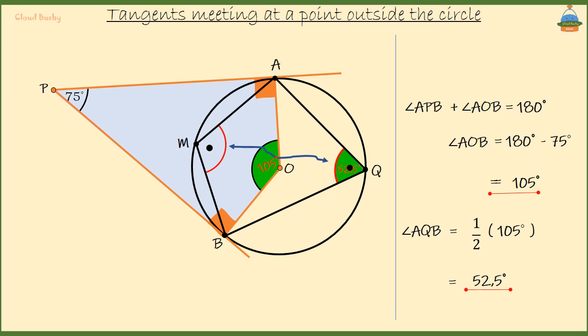Now, we know that opposite angles in a cyclic quadrilateral are supplementary. That means angle Q and angle M must sum up to 180 degrees.